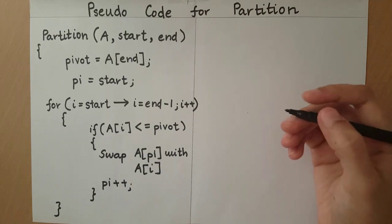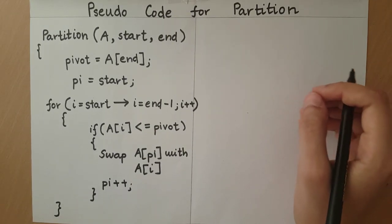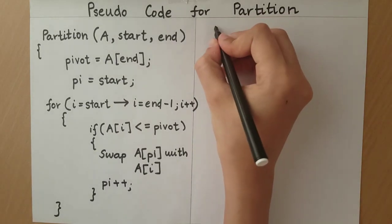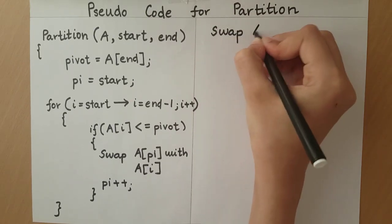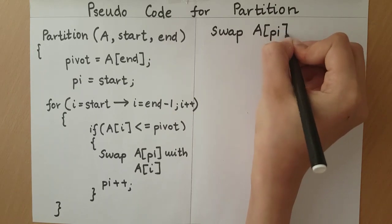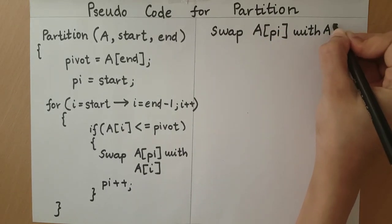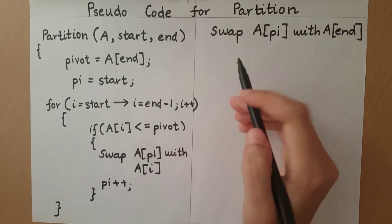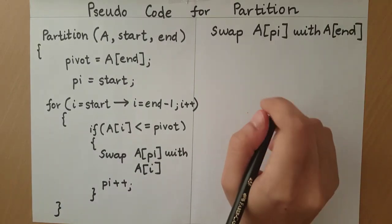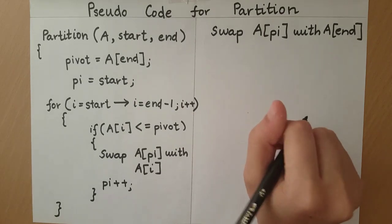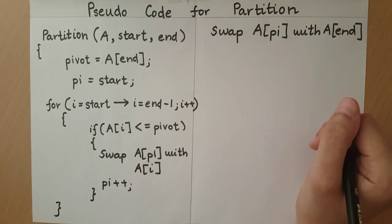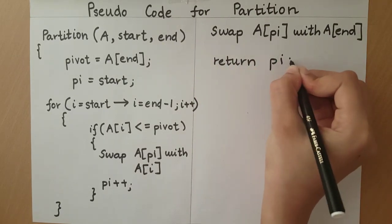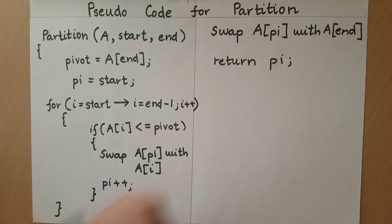We must swap array of pi and array of end. Once again, this is a pseudo code, so I am only going to write swap A of pi with A of end. Once that is done, we have to return the index at which the pivot has been placed. We will return pi. With that, our partition algorithm will end.